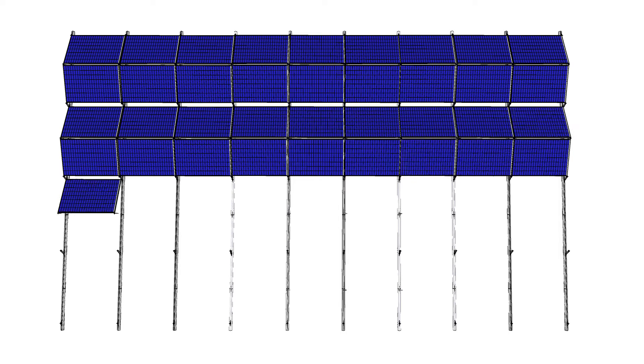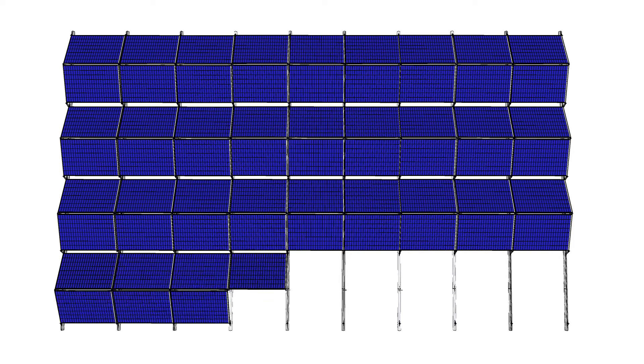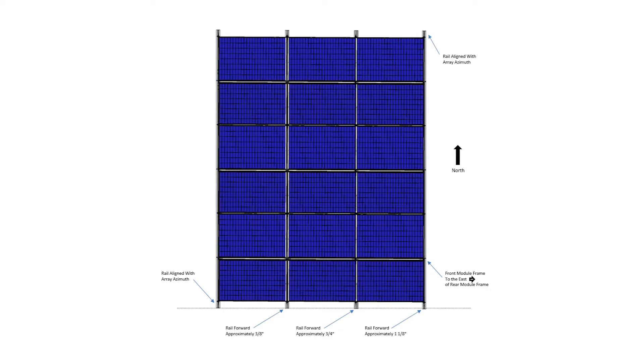It is possible to install the array from front to back, but doing so will make it more difficult to connect the modules together. The Duo array is designed with a slight offset in the rectangular shape. Please refer to your design plan and the Duo Installation Manual for exact measurements.